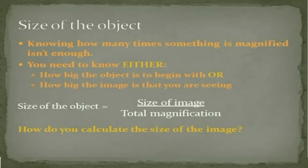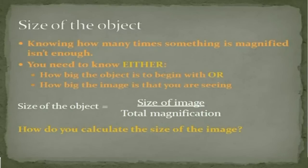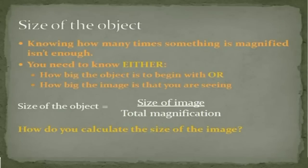But knowing how many times something has been magnified is not really enough. Because if you start off with something that's 2cm big and magnify it 5 times, or if you start off with something that is 0.2cm big and magnify it 5 times, you're going to wind up with two completely different sizes. So in order to actually calculate size, you need to know either what the size of the original object was, or what the final size of the image is. When you know one of those two things along with magnification, you can work out the third.